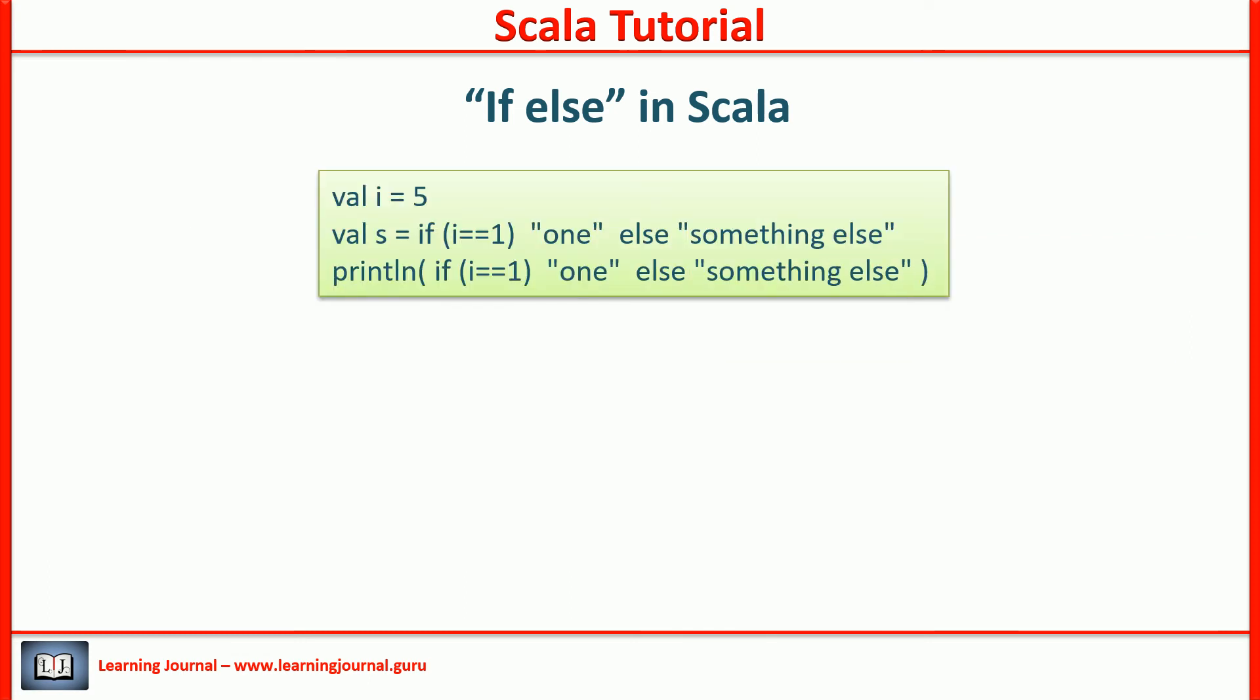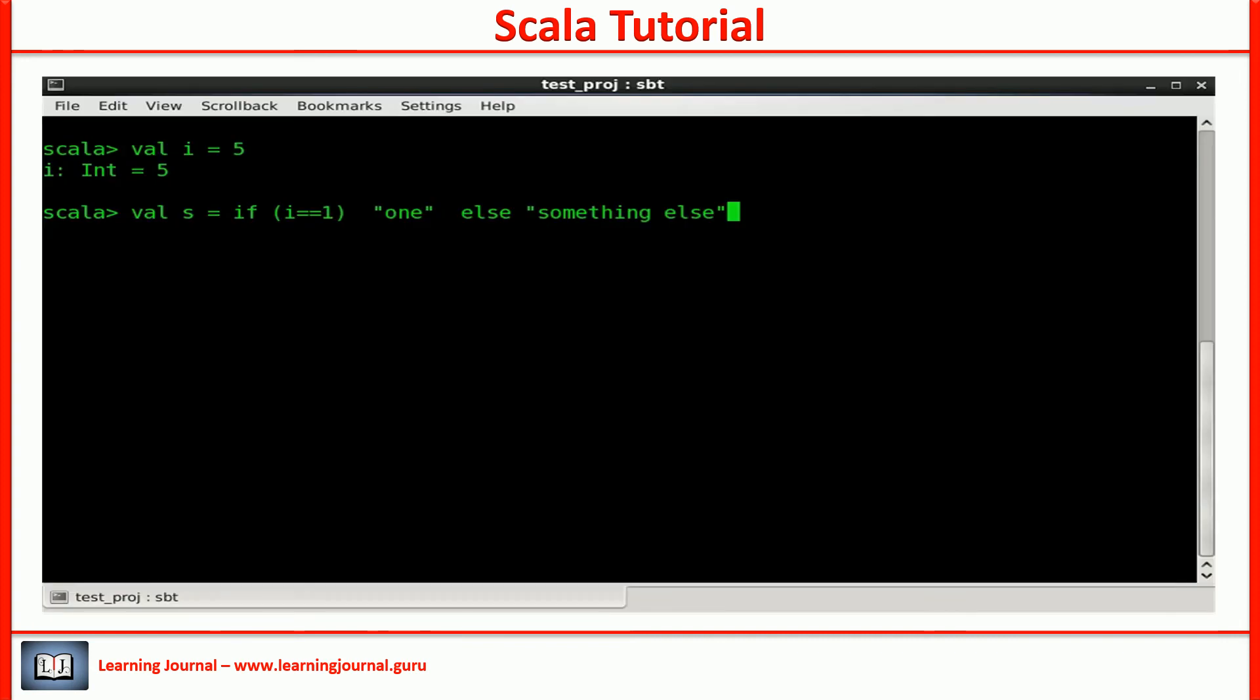Now, it's time for a small quiz. Look at this example. What is the type of s? Scala infers the result type as a string. Because in both the cases, true or false, the if-else expression returns a string. Right?